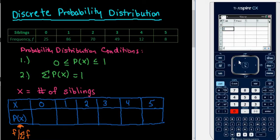So in the Sibling column, I would put the 0, 1, 2, 3, 4, and 5. In the other column, I would put the frequency. So 25, 86, 70, 49, 12, and 8.